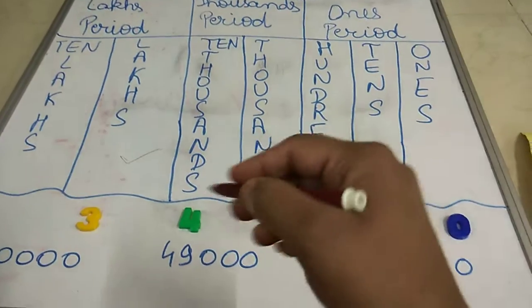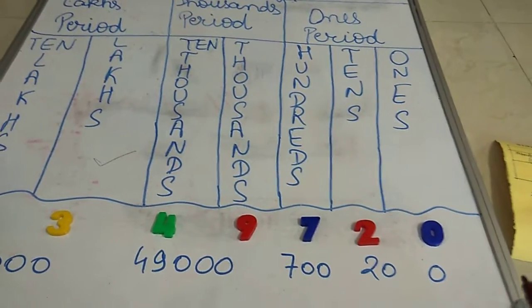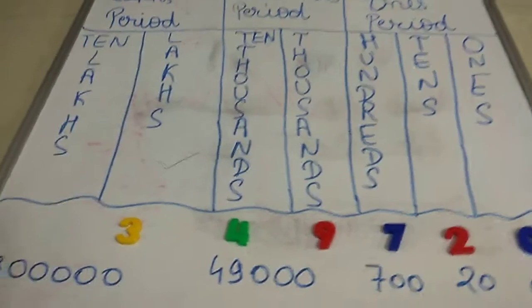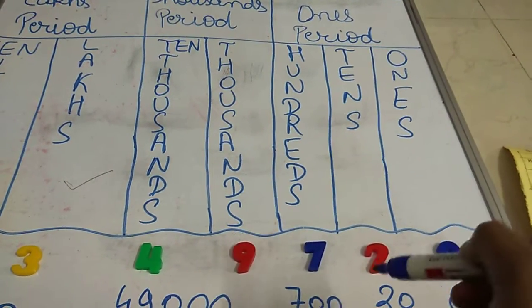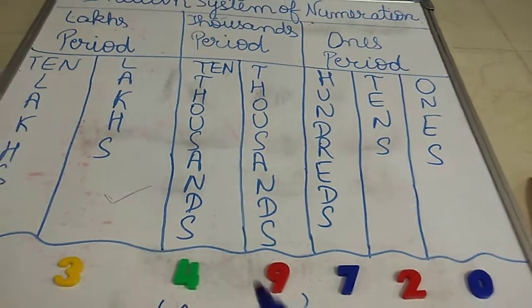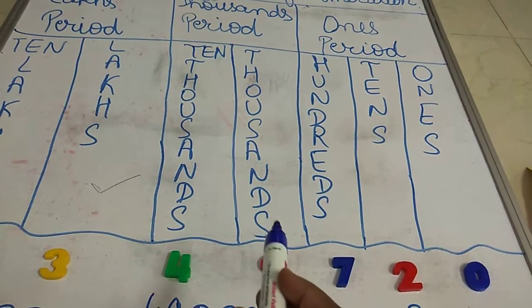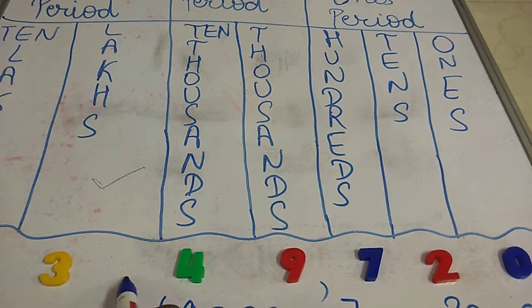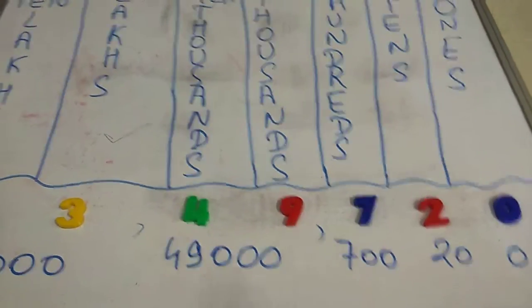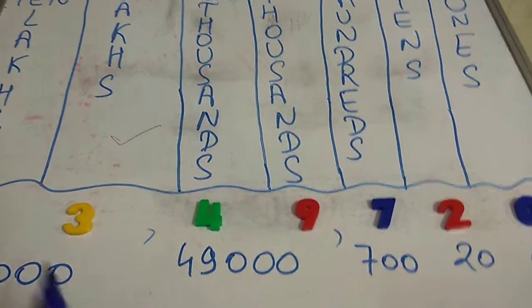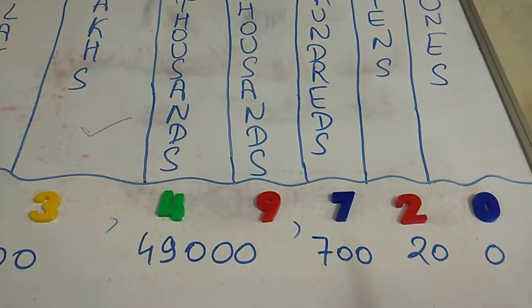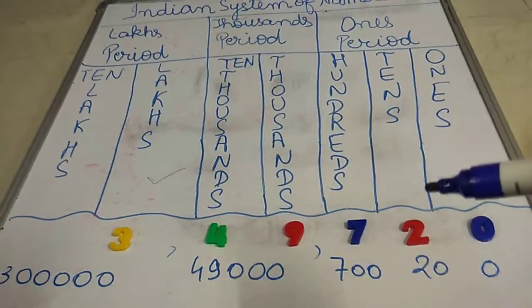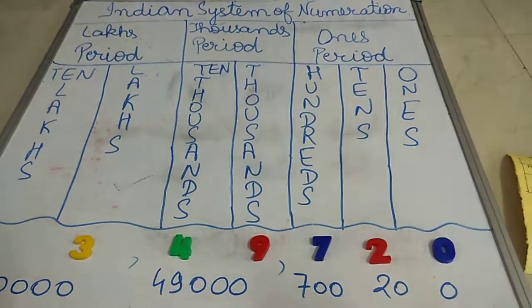This is the Indian system of numeration. Now, how do we place the commas in numbers according to the periods? After the ones period — meaning after the ones, tens, and hundreds digits — there will be a comma. After the thousands period — thousands and ten thousands — we put another comma. So this number is written as: 3,49,720, and the number name is three lakh forty-nine thousand seven hundred and twenty.